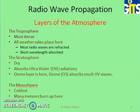The troposphere is the most dense layer — all weather takes place here: clouds, hail, storms, everything. Most of the radio waves are refracted here. Short wavelengths, meaning higher frequency signals, are absorbed, and lower frequency signals are passed through.